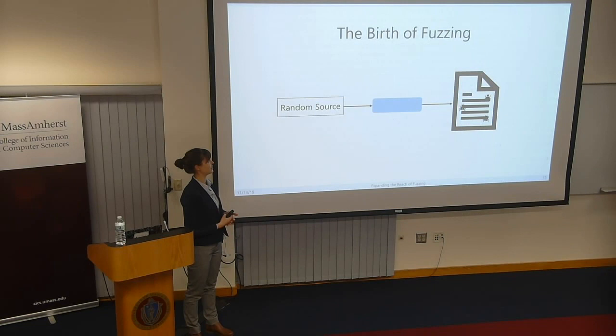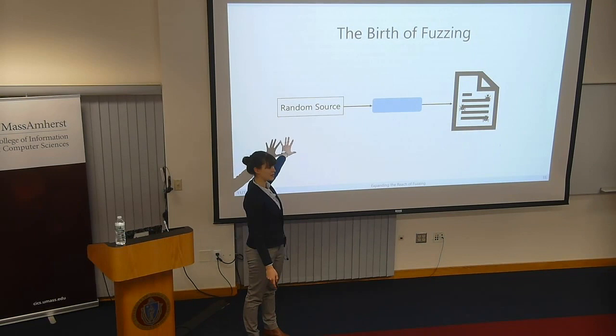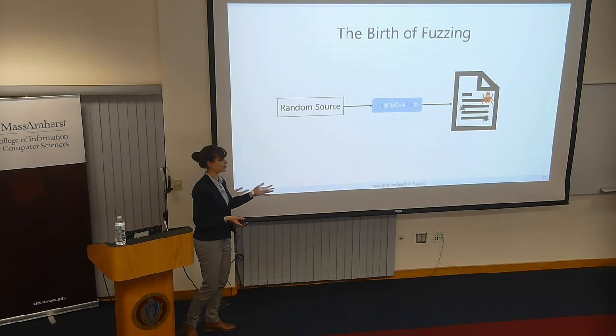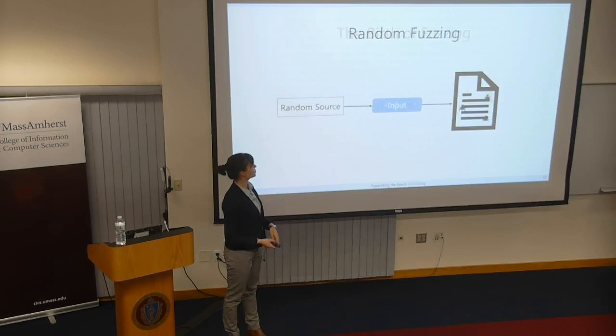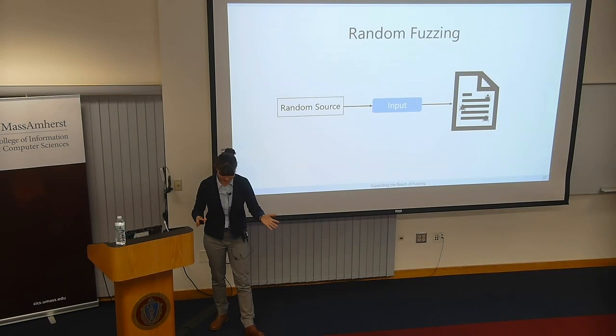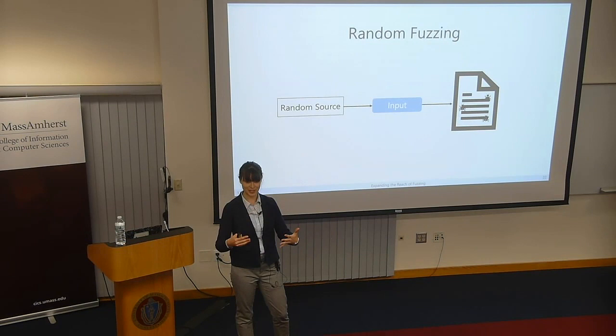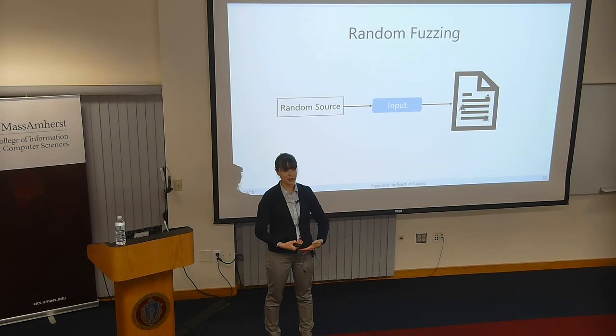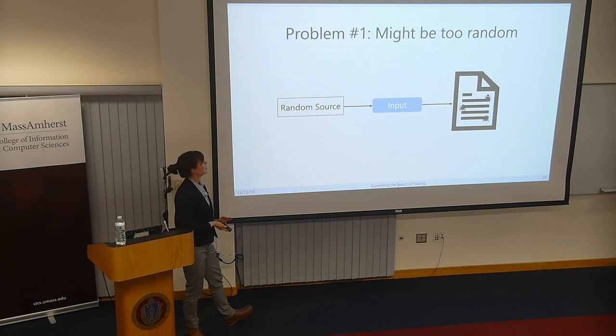This observation prompted the birth of the notion of random fuzzing. The idea is: you have your program, you have a source of randomness, you sample that source a whole bunch of times to generate basically garbage inputs, and you keep sending them to your program until one causes it to crash. In 1990 they published this paper and found a bunch of crashes and bugs. So this is what we call purely random fuzzing, and it found real security vulnerability bugs.